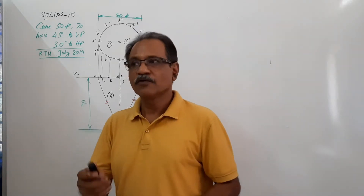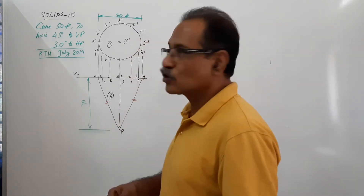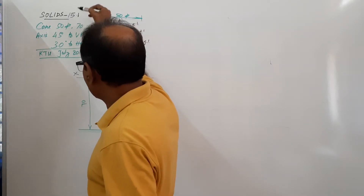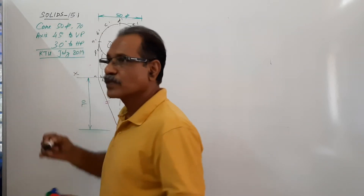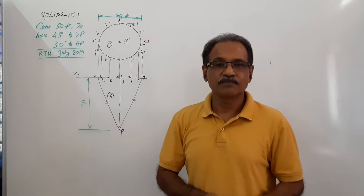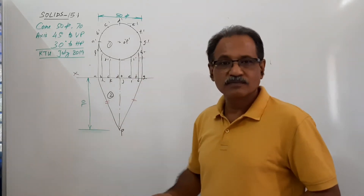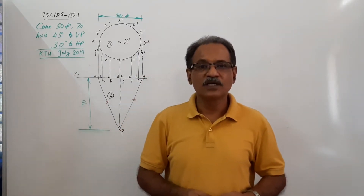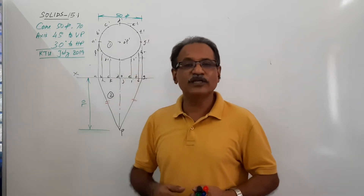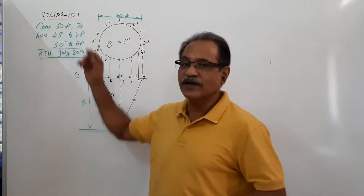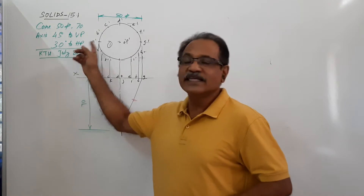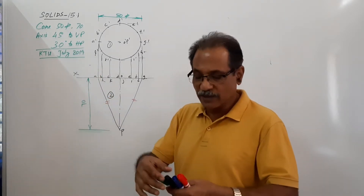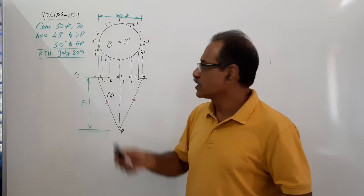Hi students, we are going to solve this question by auxiliary projection method. A circle resting on VP, with axis making 45 degrees to HP and 45 degrees to VP, and 30 degrees to HP. We are going to draw it by auxiliary projection method.